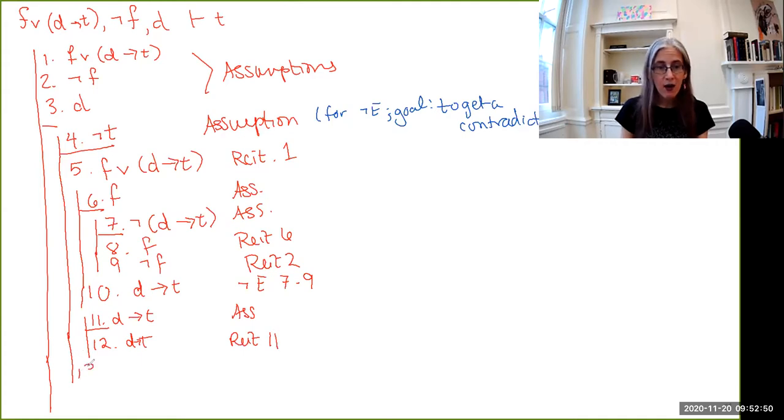And now we are in a position to be able to do something with disjunction elimination. We have a disjunction on line five. We have one sub proof that starts with one of the disjuncts and ends up with some formula. We have another sub proof that starts with the other disjunct and ends with the same formula. So whichever one is the case, we know that we can get D implies T.